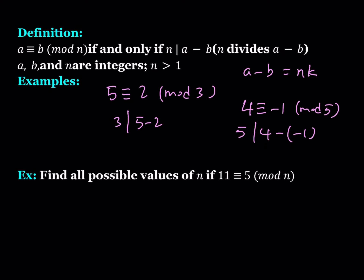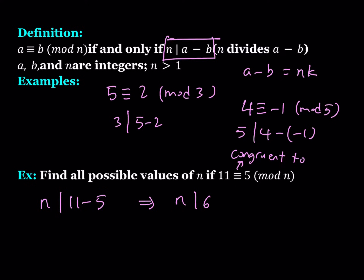This is one of the first examples I go over when I teach modular arithmetic: find all possible values of n if 11 is congruent to 5 mod n. We don't know the modulus, we're trying to find it. Using our formal definition, n divides 11 minus 5, which means n divides 6. Since n must be an integer greater than 1, the divisors of 6 greater than 1 are 2, 3, and 6 — these are the possible values of n.